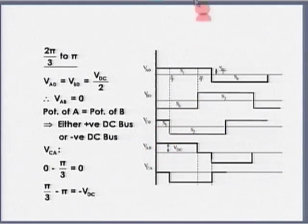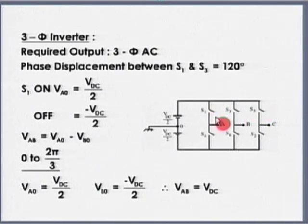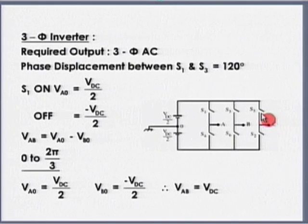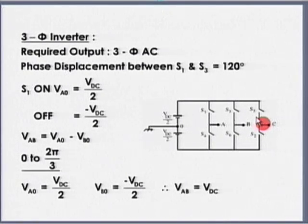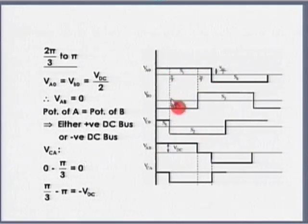VA0, VB0 and VC0 are square waves each of magnitude Vdc/2. S5 is turned on after 240 degrees — after 120 degrees S3, then after 120 more degrees S5, and that remains on for 180 degrees. So 240 plus 180 completes one cycle with 60 degrees still remaining. This is the 60 degrees where S5 turns off and S2 is turned on. This is one complete cycle, each of 60 degrees: π/3, 2π/3, and π.